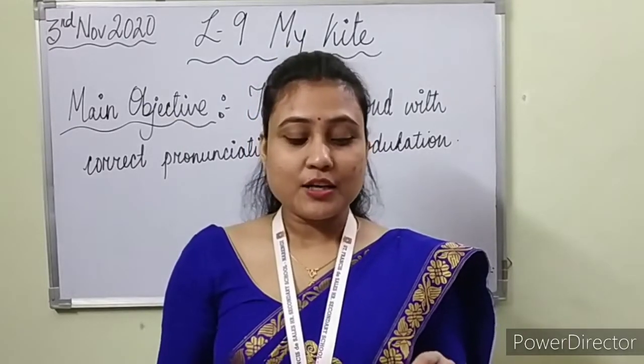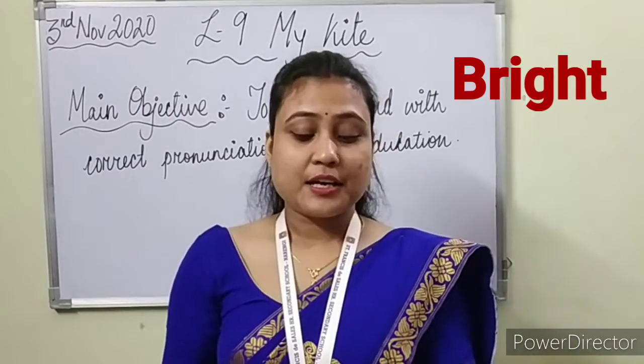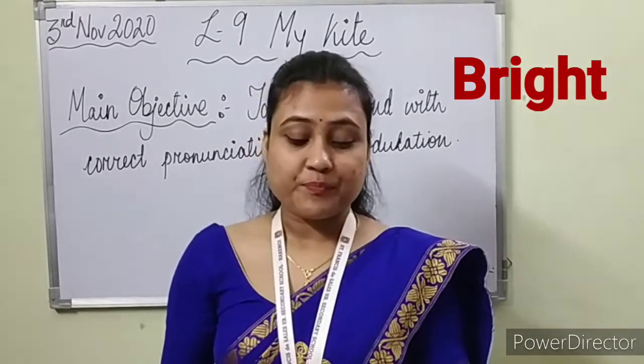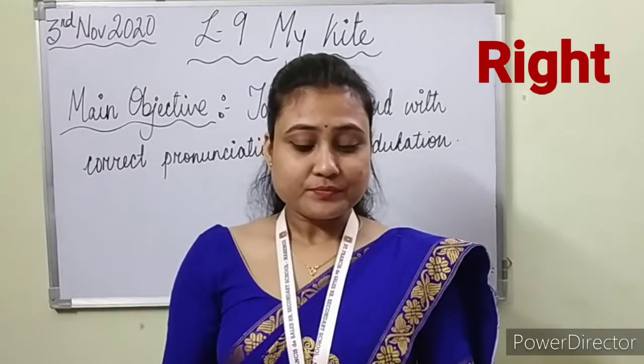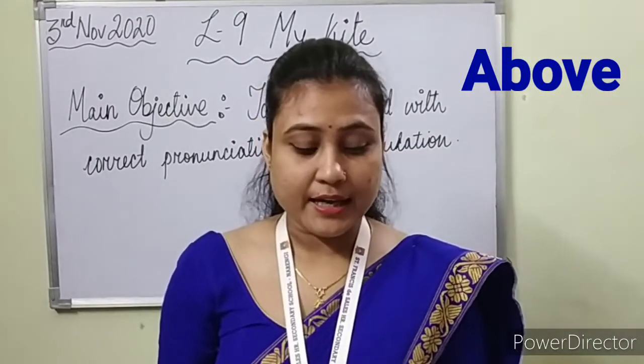There are many new words in the poem. The first is 'rises' — R-I-S-E-S. The second is 'bright' — B-R-I-G-H-T. The third is 'left' — L-E-F-T. The fourth is 'right' — R-I-G-H-T. The fifth is 'above' — A-B-O-V-E. And the last word is 'delight' — D-E-L-I-G-H-T.